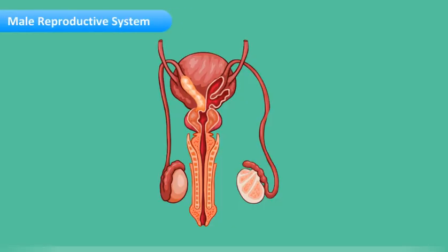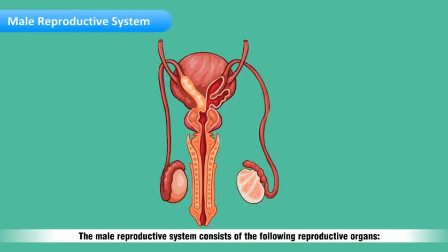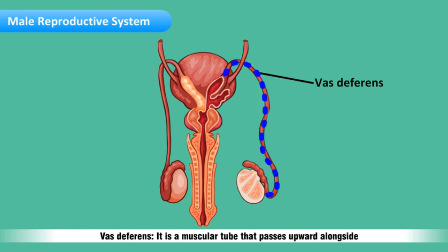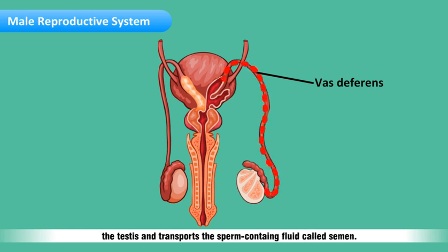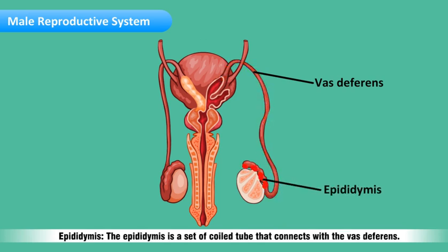The male reproductive system consists of the following reproductive organs. Testes: it is made up of a number of coiled tubes in which the sperms are produced. Vas deferens: it is a muscular tube that passes upward alongside the testes and transports the sperms, containing fluid called semen.